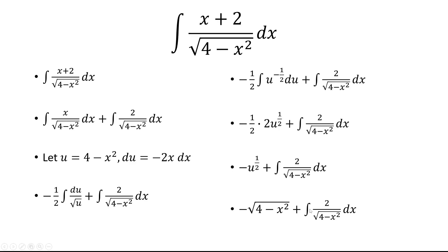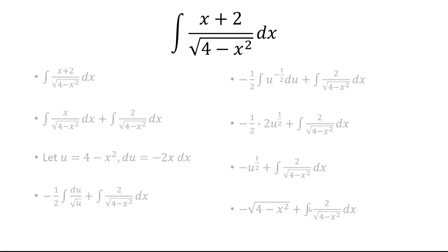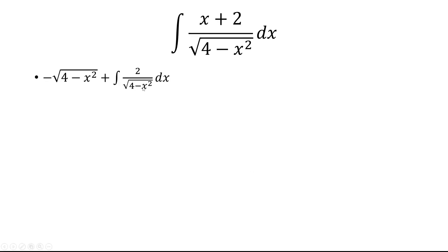Now on the second integral, notice that it's 4 minus x squared. Ideally, it would be nice to have 4 minus 4x squared. So how can we change the coefficient of x to make it 4? Well, we're going to do that by making a substitution.